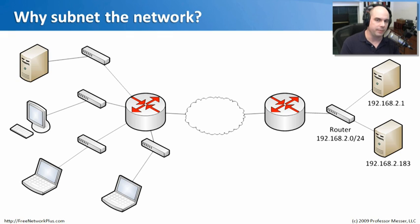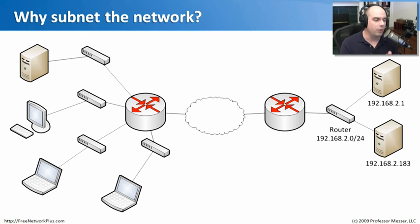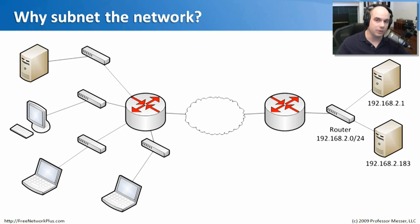Our previous module talked about the subnet from the perspective of a single device. But as a Network Plus professional, you may be asked to come up with an entire IP address numbering scheme for every network in your organization. That means you need to think about how many segments you need, how many different networks there are going to be, how many hosts per network, and then figure out your subnet mask scheme based on restrictions placed upon you.